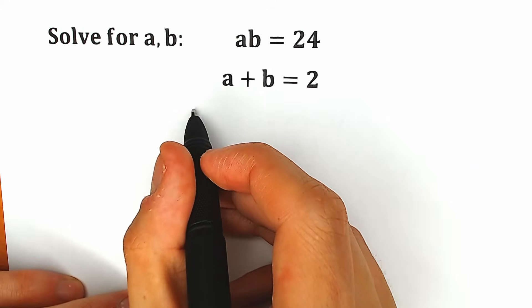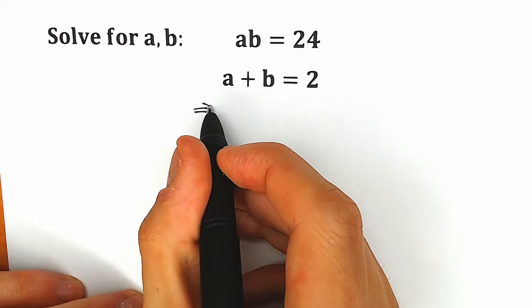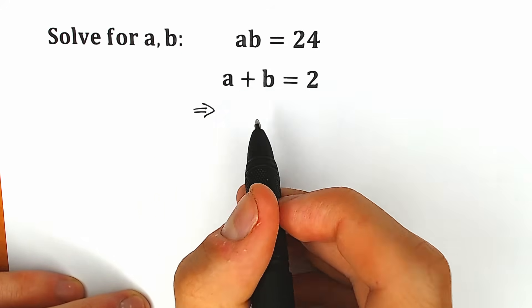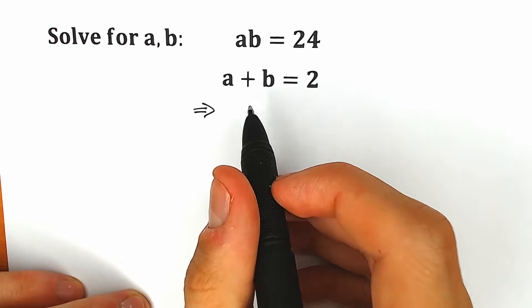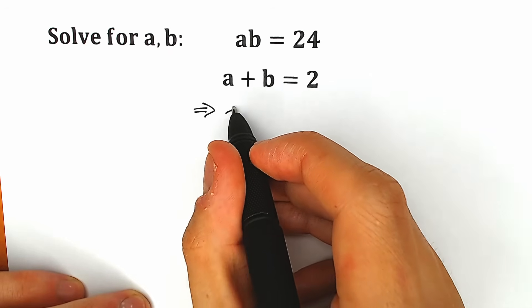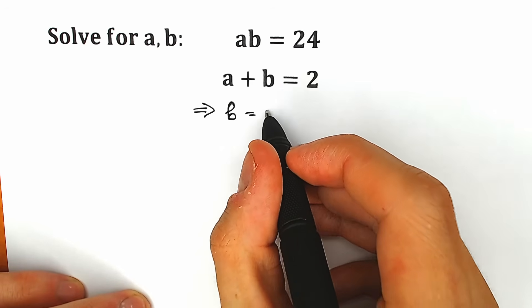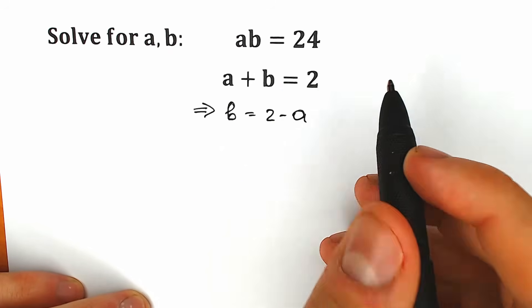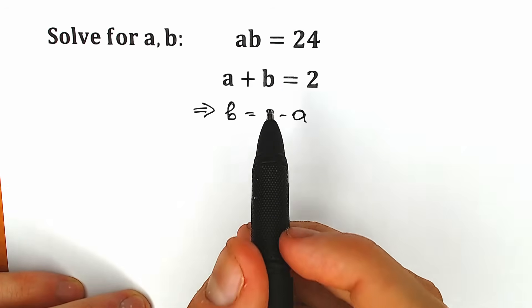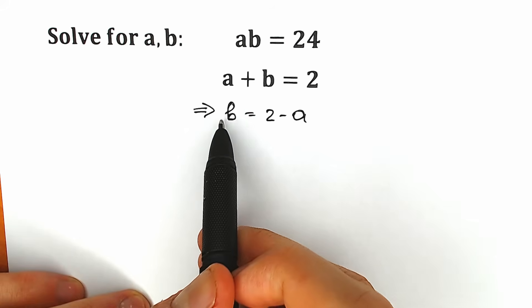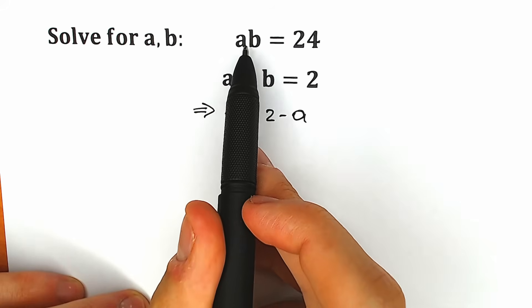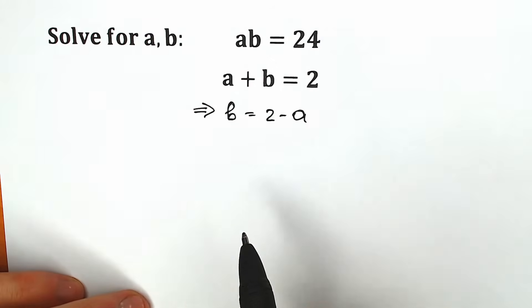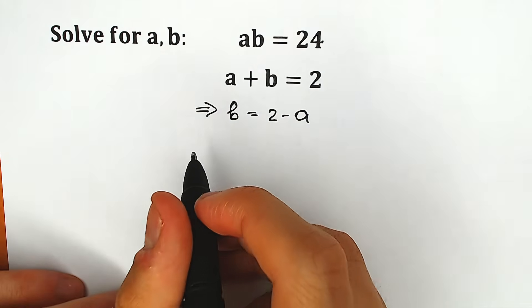According to basic math principles, we need to express b from the second equation. So our b is equal to 2 minus a, and according to these principles we need to plug this in instead of b — we're going to plug in 2 minus a into the first equation.